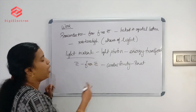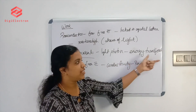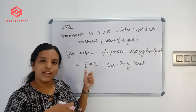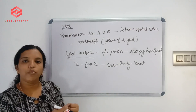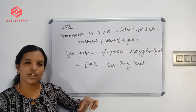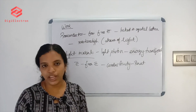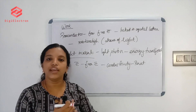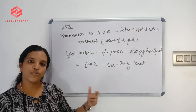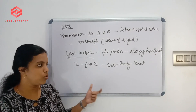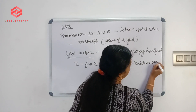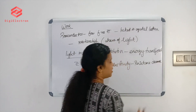When light is incident, photons are transferred to the electrons. Electrons are freed from the crystal lattice and flow through the semiconductor. This increases conductivity, and as a result, the value of resistance decreases.